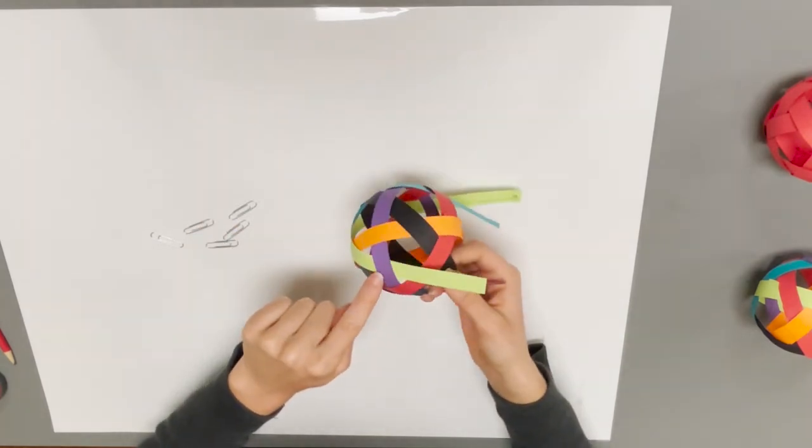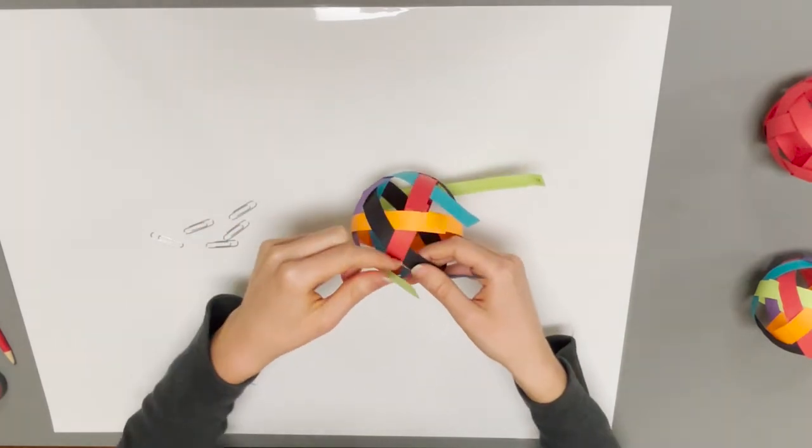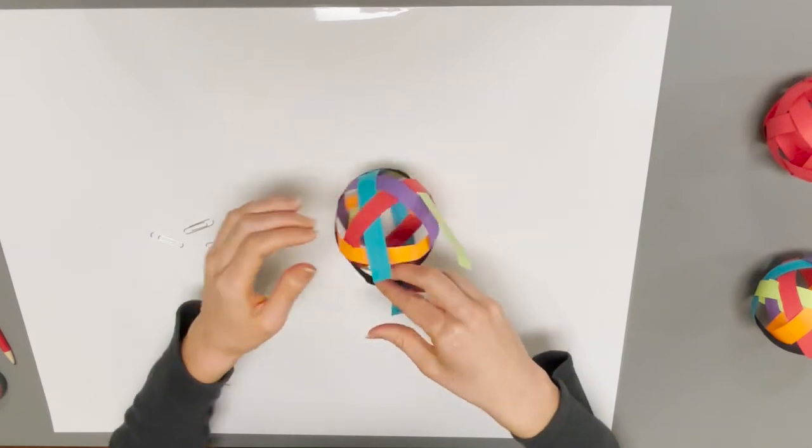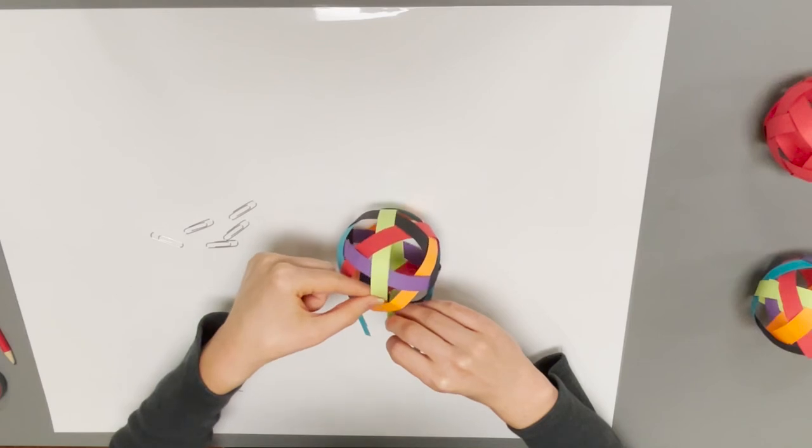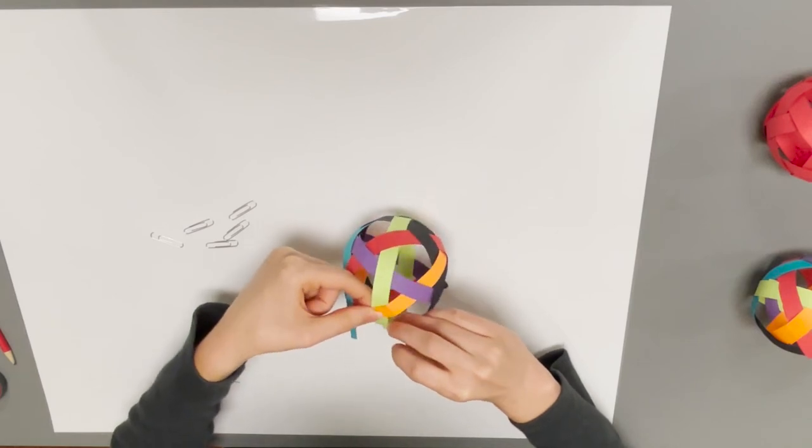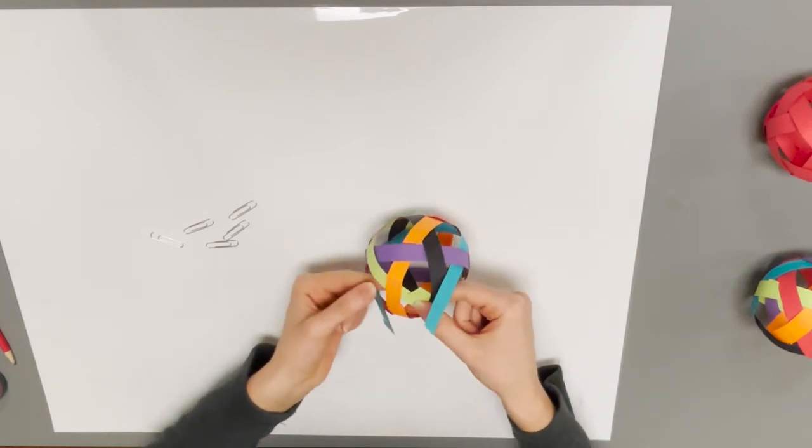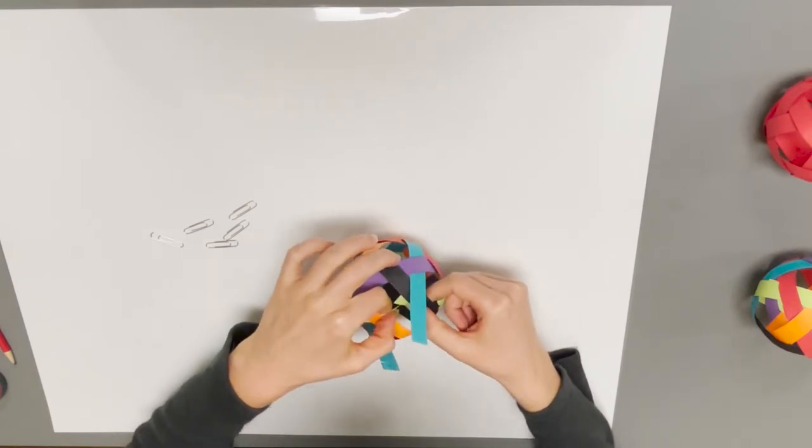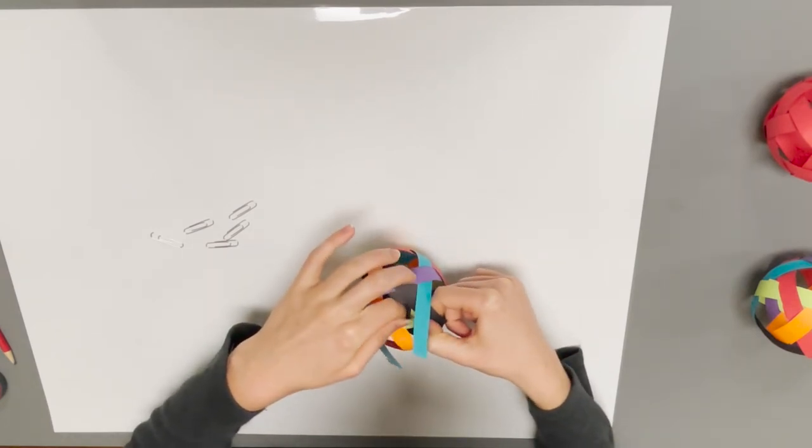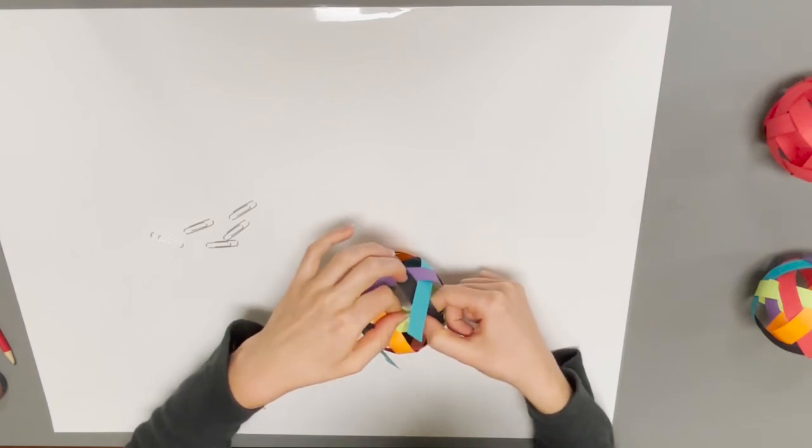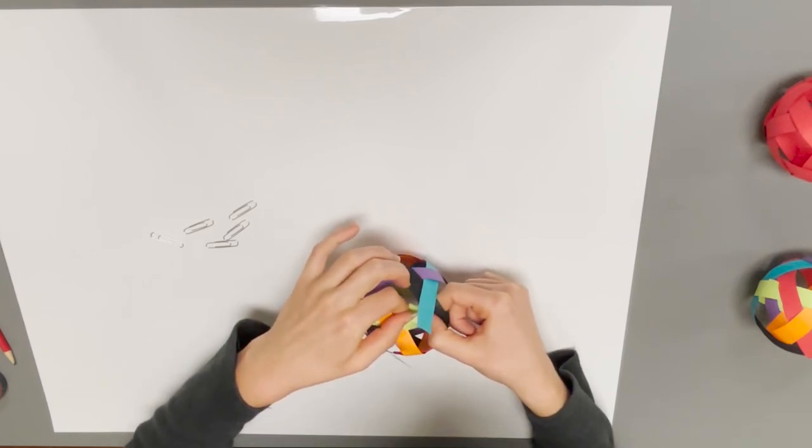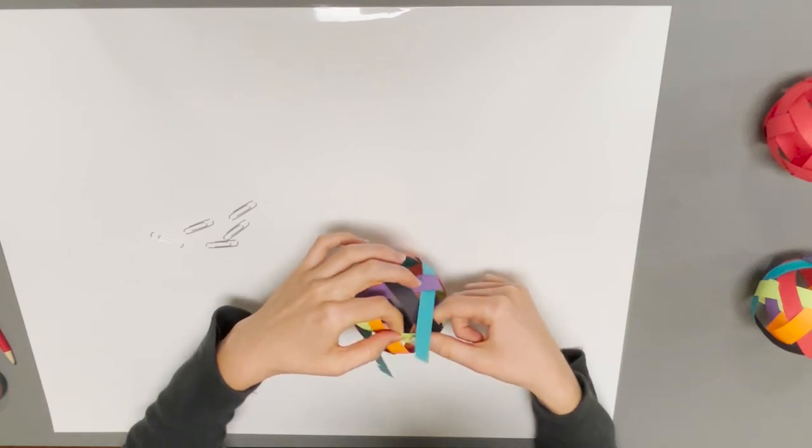So green, it's going under purple, so it goes over red and then under green. And this one is going to look a little weird, but it needs to go under the orange so that the teal can be in the right spot.